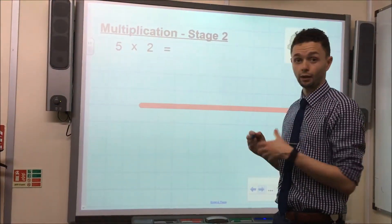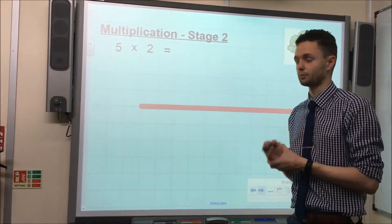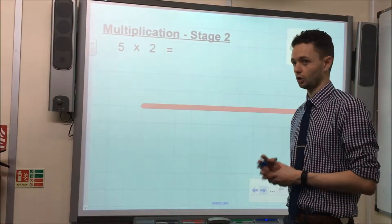The second number that we are multiplying by, 2 in this case, tells us how big each jump needs to be. So let me show you what that looks like.